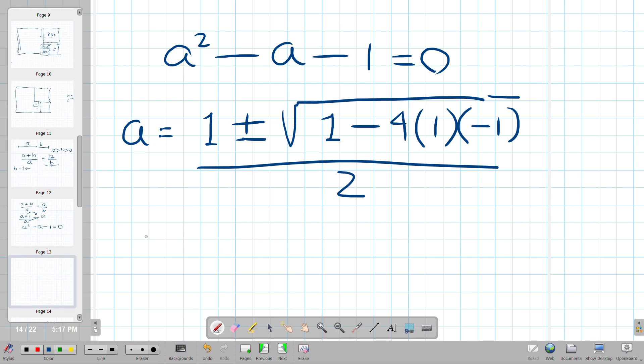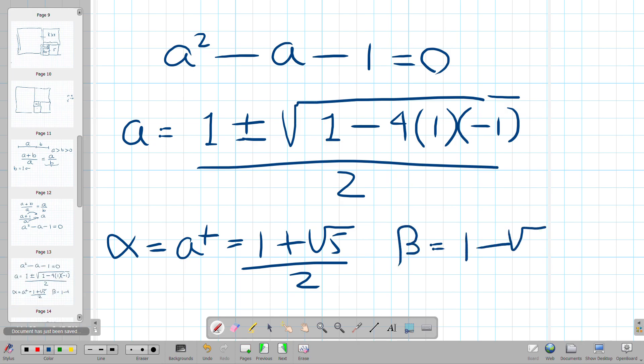And generally, the terms that are used is alpha for what is really the positive root, one plus square root of five over two, and beta is one minus square root of five over two.